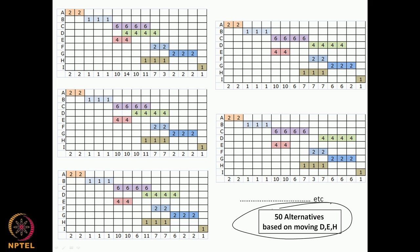So our solution space is about 50 possible options that have to be explored to find the best resource profile we can get. That is the flexibility we have with the current CPM network given the durations and relationships — we do not have any more alternatives. As we have several activities with float in a network, the alternatives will rapidly multiply. Even with 50 alternatives, it is possible to compute the resource profile for all 50 and then decide which profile we want.